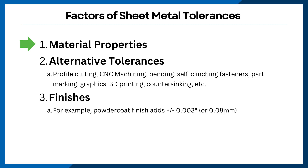Let's take a look at some of the factors that can affect sheet metal tolerances. Metal properties like thickness variation, elasticity, and hardness impact how metals behave during processing. Thinner sheets are more prone to warping, while materials like aluminum and stainless steel require specific considerations to ensure tolerance accuracy.